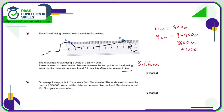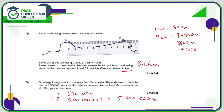Question four: the scale is 1 centimeter on the map equals 500,000 centimeters in real life. The map distance from Liverpool to Manchester is 11.2 centimeters, so in real life that's 500,000 times 11.2, which is 5,600,000 centimeters. Dividing by 100 gives meters, then dividing by 1000 gives kilometers — so the answer is 56 kilometers.